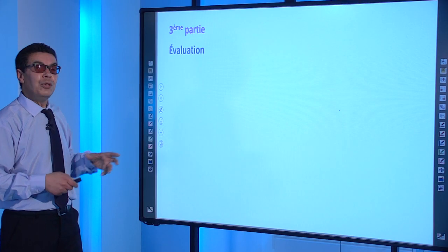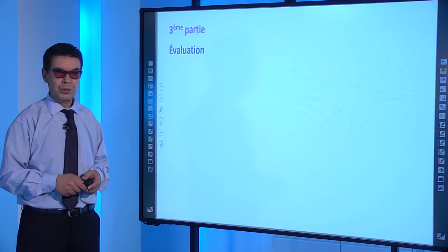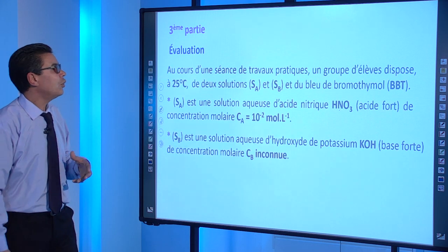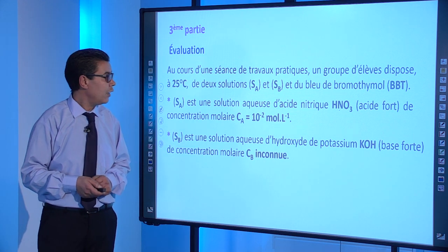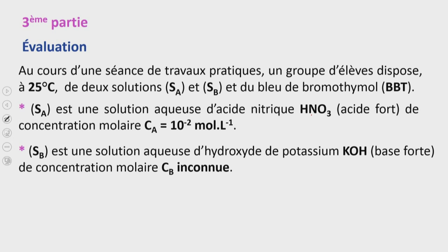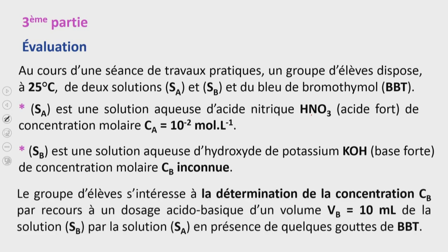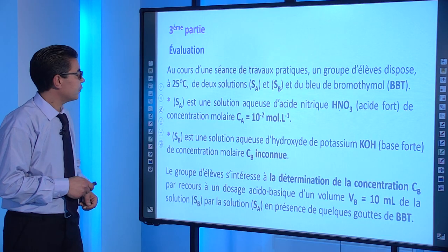Passons maintenant à une petite évaluation portant sur ce cours. Au cours d'une séance de travaux pratiques, un groupe d'élèves dispose à 25°C de deux solutions SA et SB et du bleu de bromothymol (BBT). SA est une solution aqueuse d'acide nitrique HNO₃ (acide fort) de concentration molaire CA = 10⁻² mol·L⁻¹. SB est une solution aqueuse d'hydroxyde de potassium KOH (base forte) de concentration molaire CB inconnue. Le groupe s'intéresse à la détermination de CB par dosage acido-basique d'un volume VB = 10 mL de SB par la solution SA en présence de quelques gouttes de BBT.